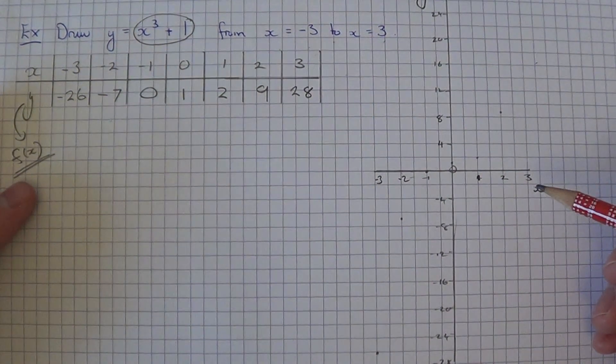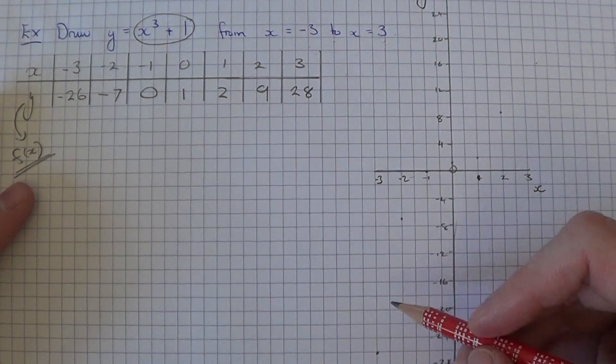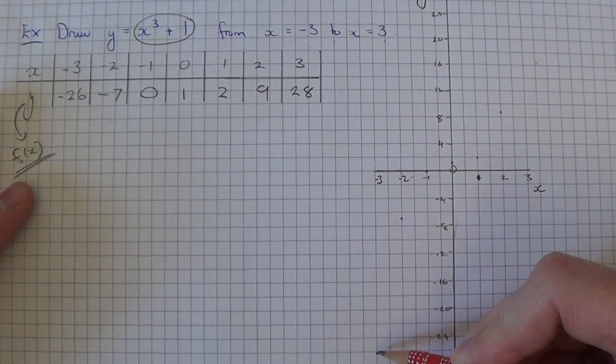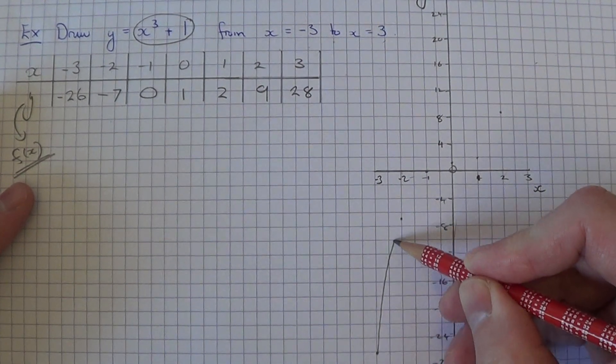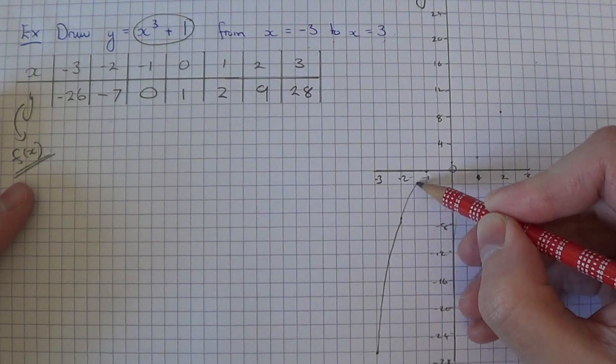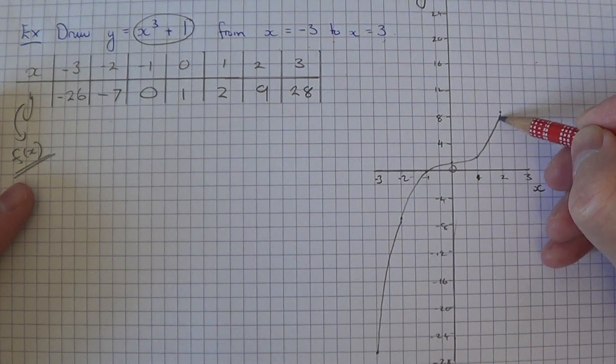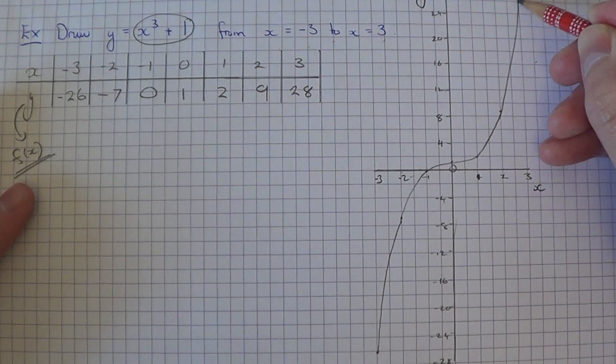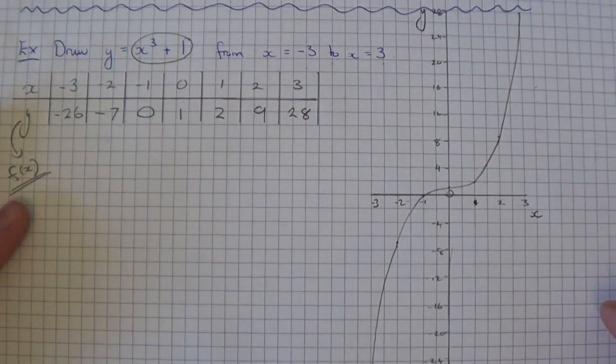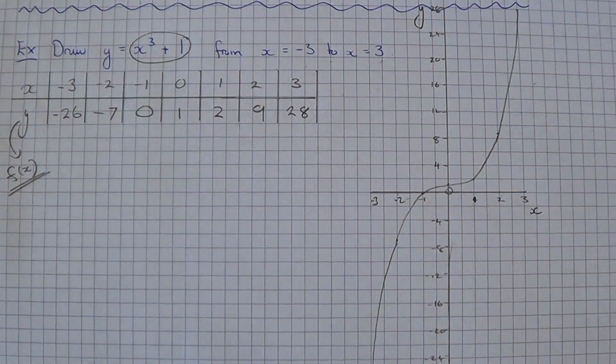So all we need to do now is just do a smooth curve going through these points. And there we have our cubic graph. Thanks for watching.